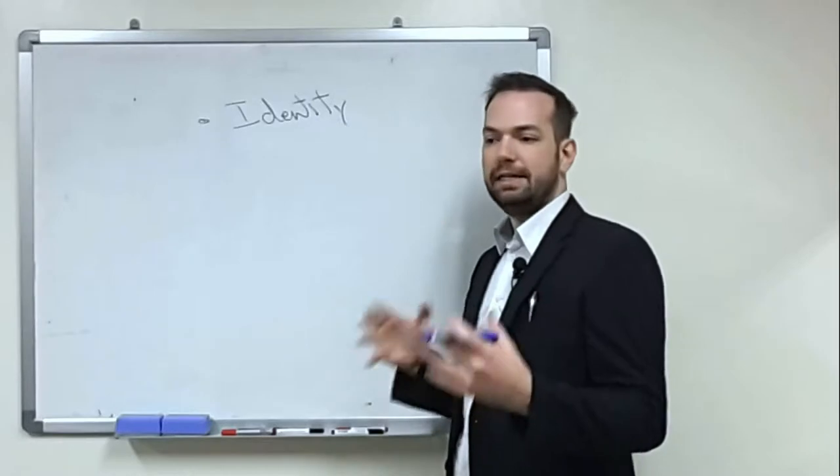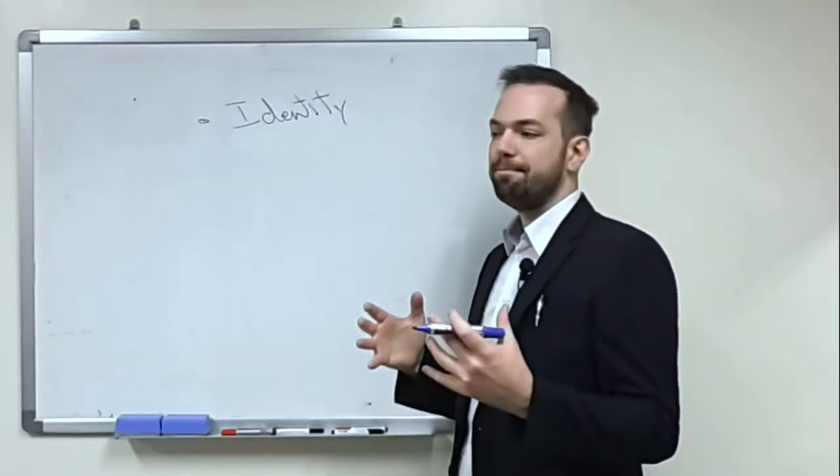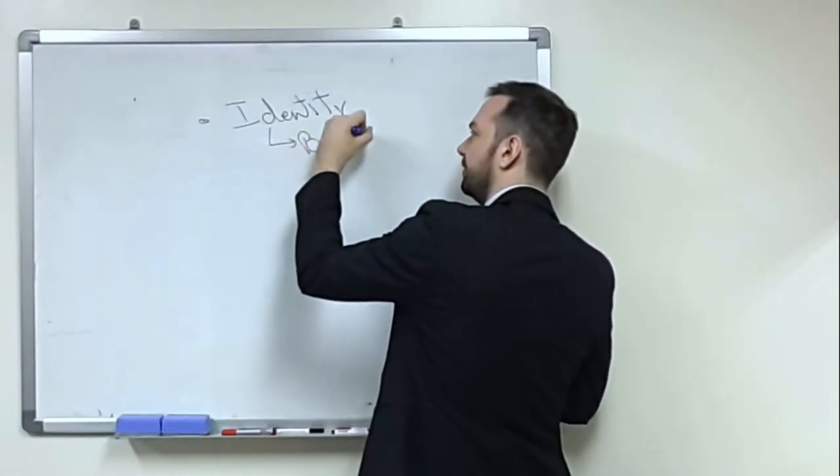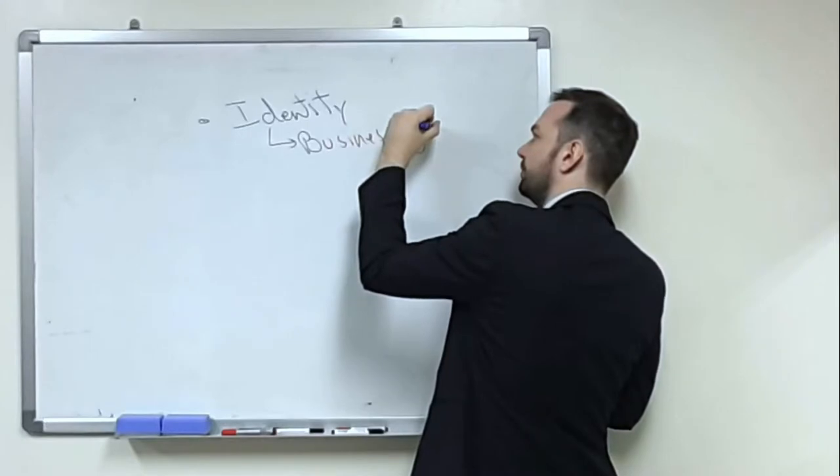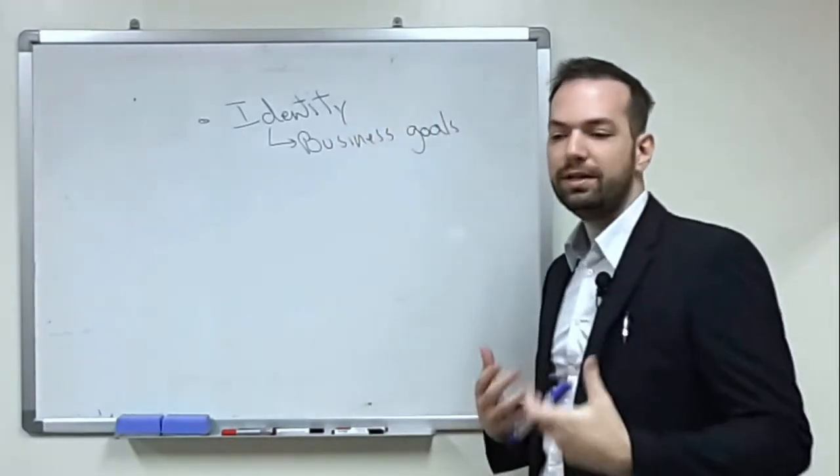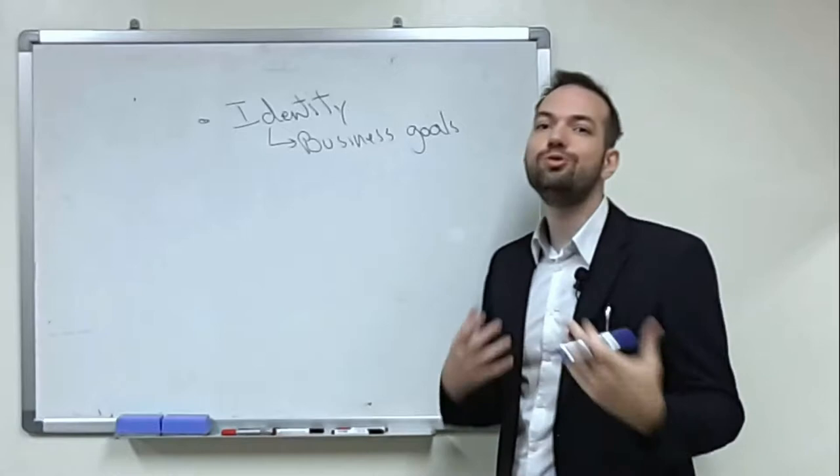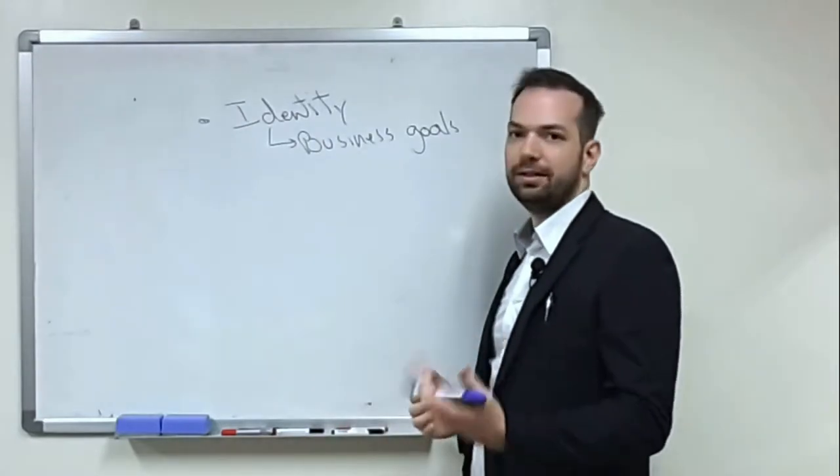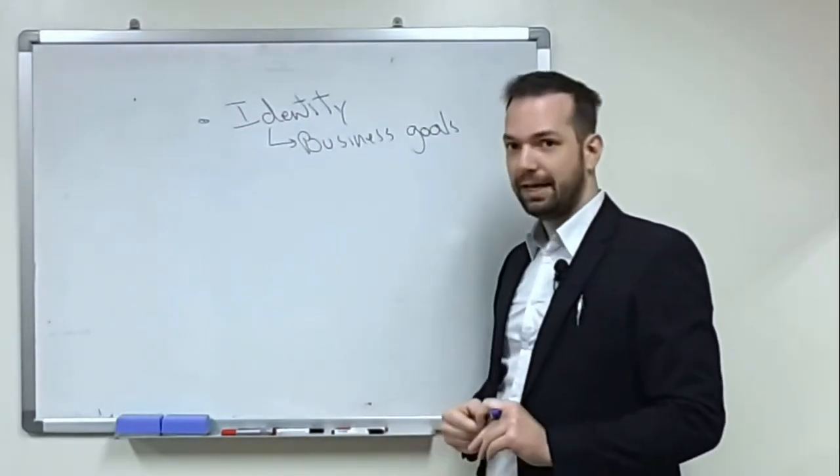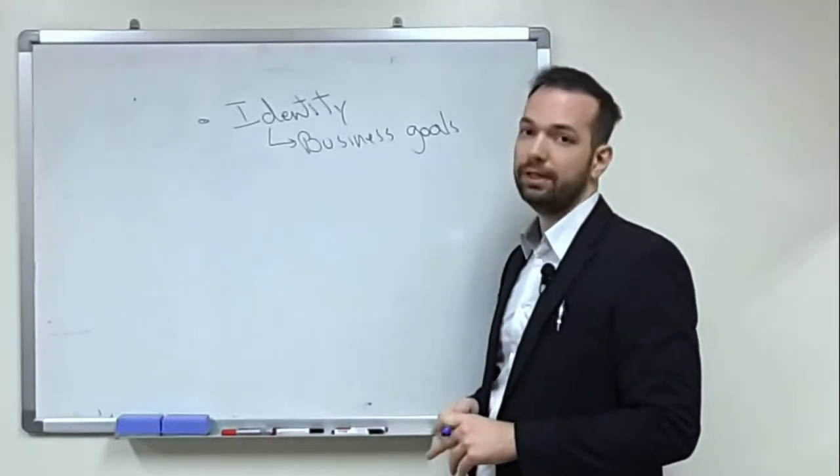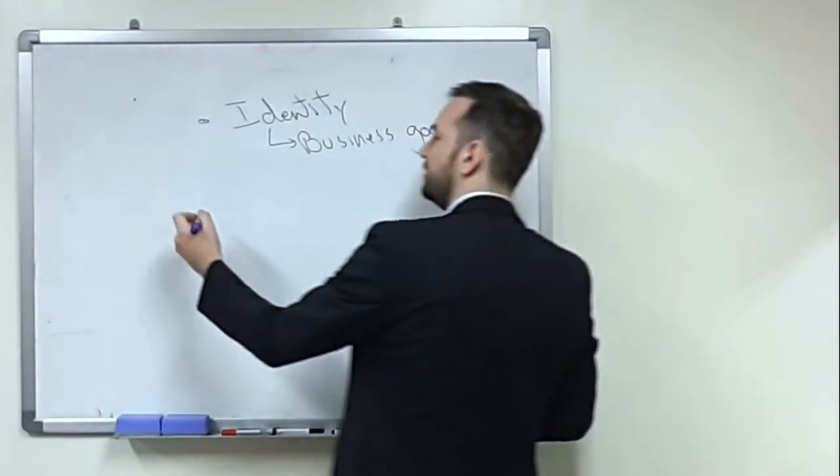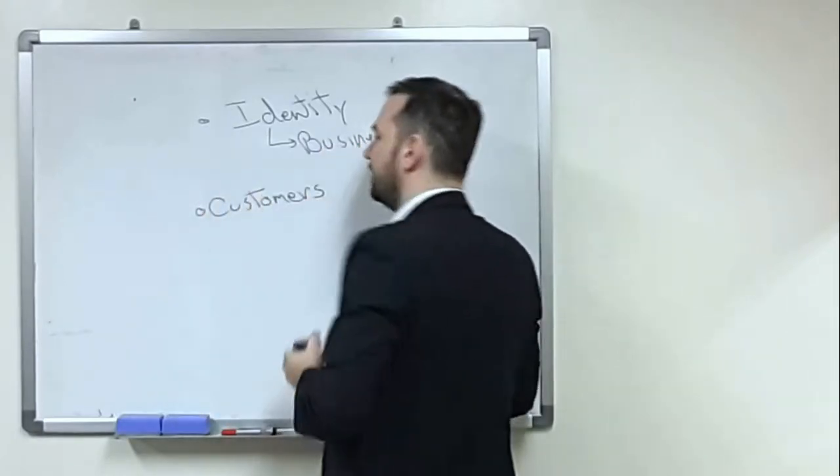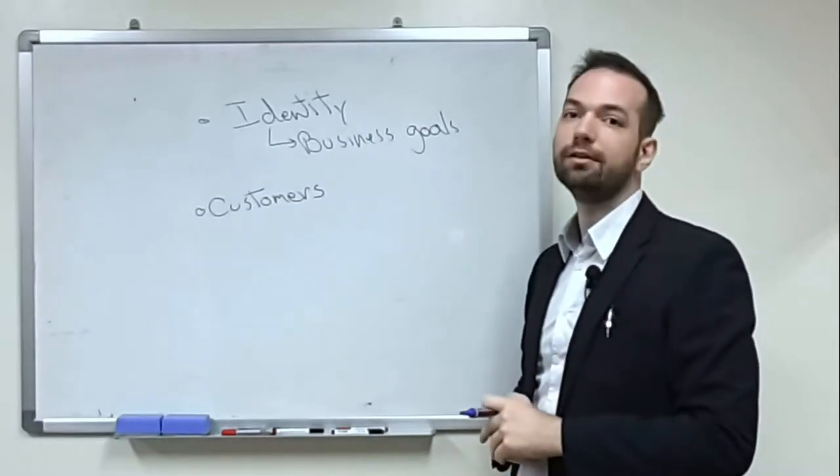Business goal, right? So what does the business try to do? What's the point of the business existing? Normally a business identifies what they're trying to do at the beginning and then from that, from understanding what the business goal is, then they try to identify customers. So their customers, who are they working for?